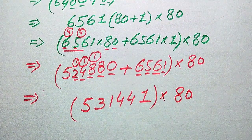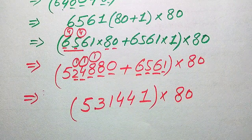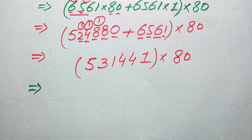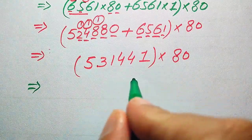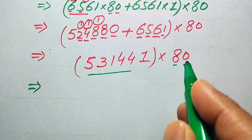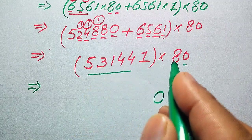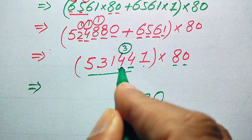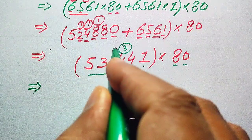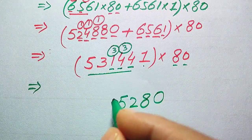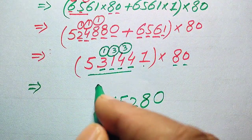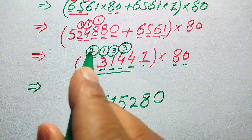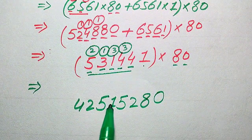We use the same technique again. We consider one-digit and two-digit parts of 80. 0 times 531441 is 0; 8 times 531441: 8 ones are 8, 8 fours are 32 write 2 carry 3, 8 fours are 32 plus 3 is 35 write 5 carry 3, 8 ones are 8 plus 3 is 11 write 1 carry 1, 8 threes are 24 plus 1 is 25 write 5 carry 2, 8 fives are 40 plus 2 is 42. So we get 42515280.